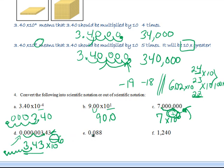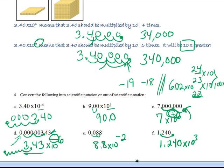The next one: move the decimal 2 places to get 8.8 times 10 to the negative 2nd. And move a decimal point over three places to get 1.240 times 10 to the 3rd. There are your exponent conversions.